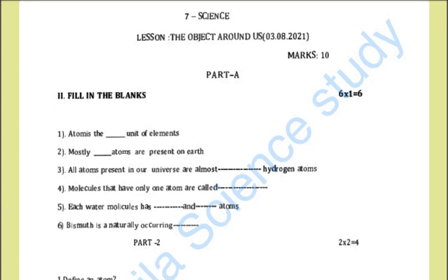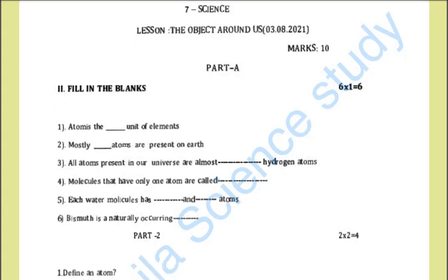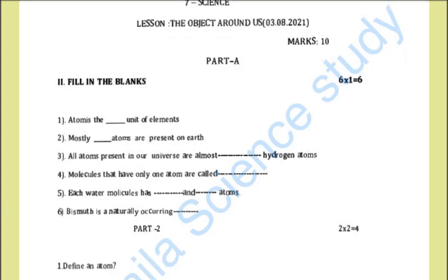Look at the fill-in-the-blanks. There are 6 fill-in-the-blank questions, and the answers are uploaded. Please check the question. First: atom is a basic unit of elements. Second: mostly hydrogen atoms are present on earth.